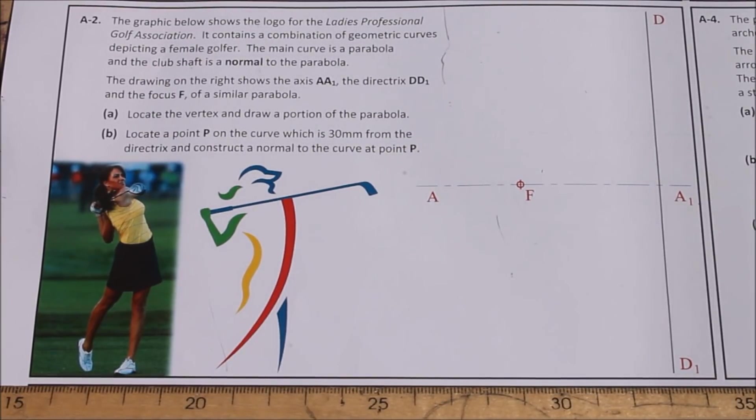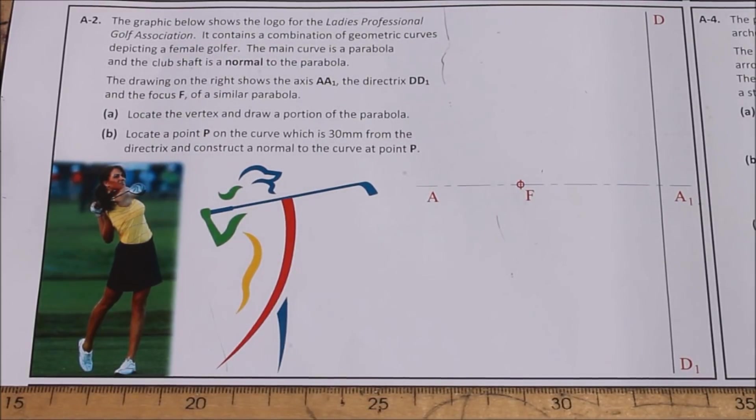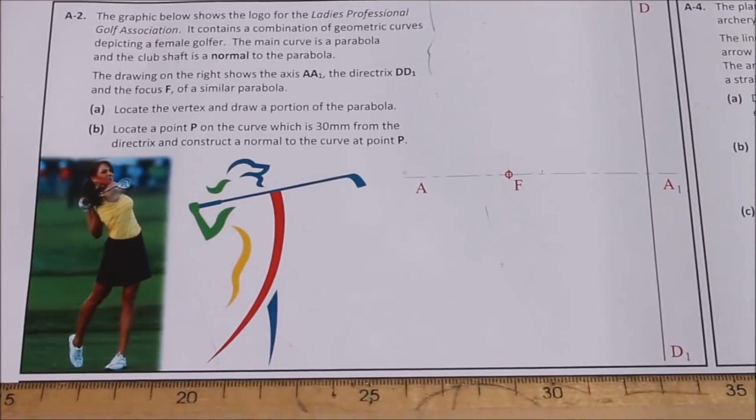Read it quickly. The graphic below shows the logo for the Ladies Professional Golf Association. It contains a combination of geometric curves depicting a female golfer. The main curve is a parabola and the curve shaft is the normal to the parabola. The drawing on the right shows the axis AA1, the directrix DD1 and the focus F of a similar parabola.